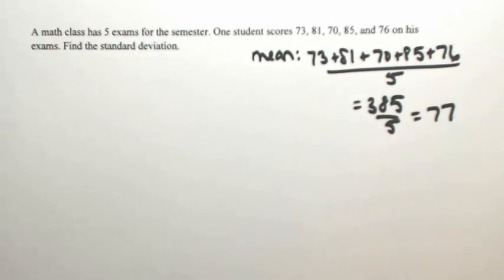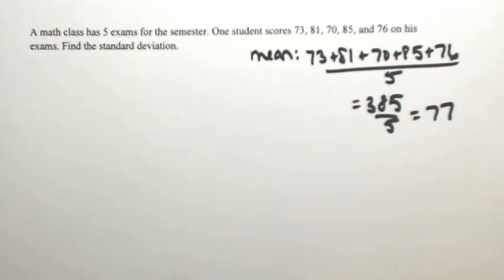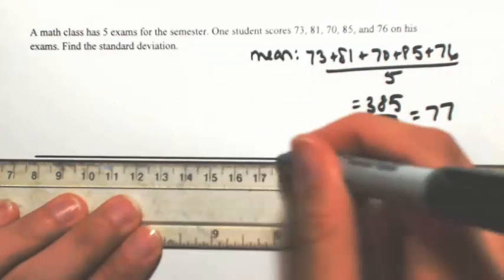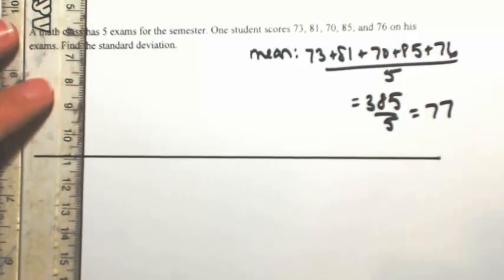So now we're going to figure out what's the deviation. So I think the best way to do this is to set up a table. We're going to have three columns.